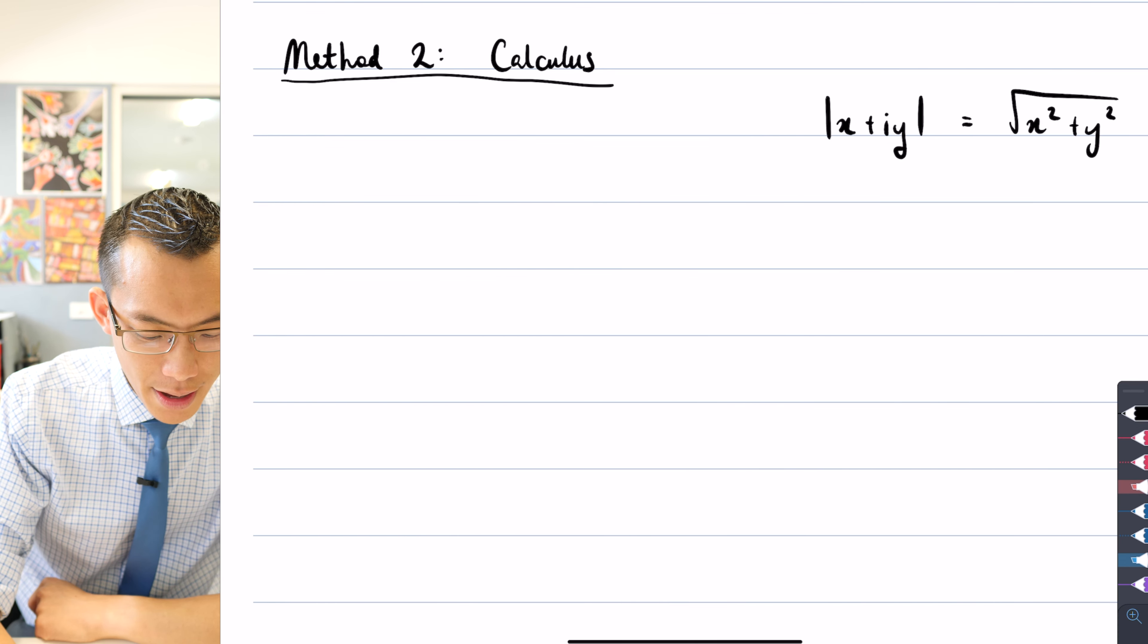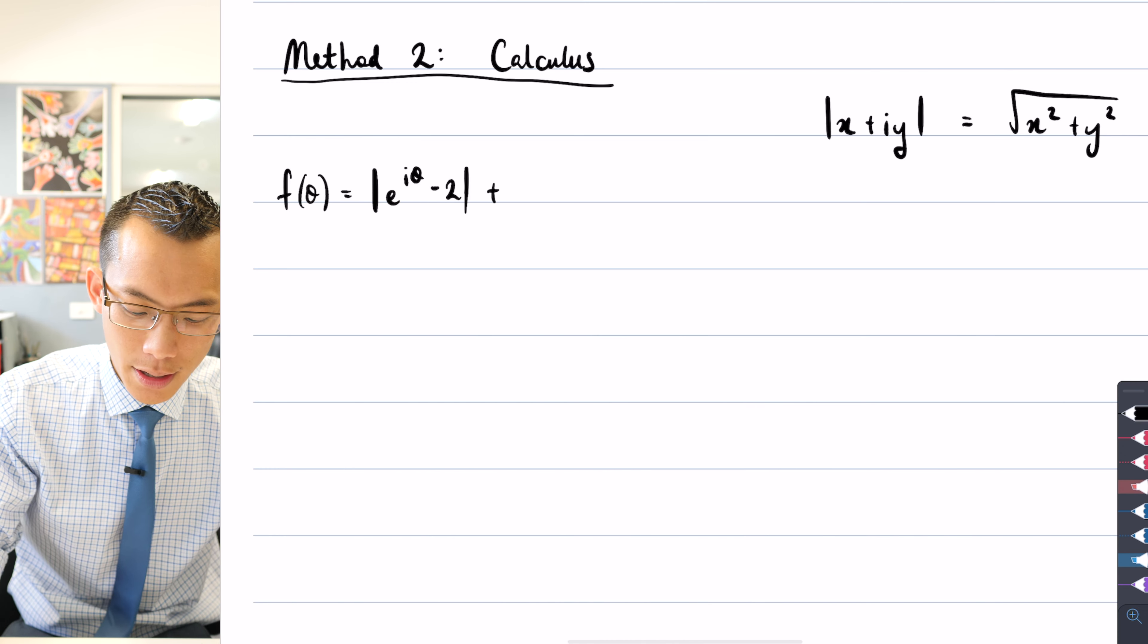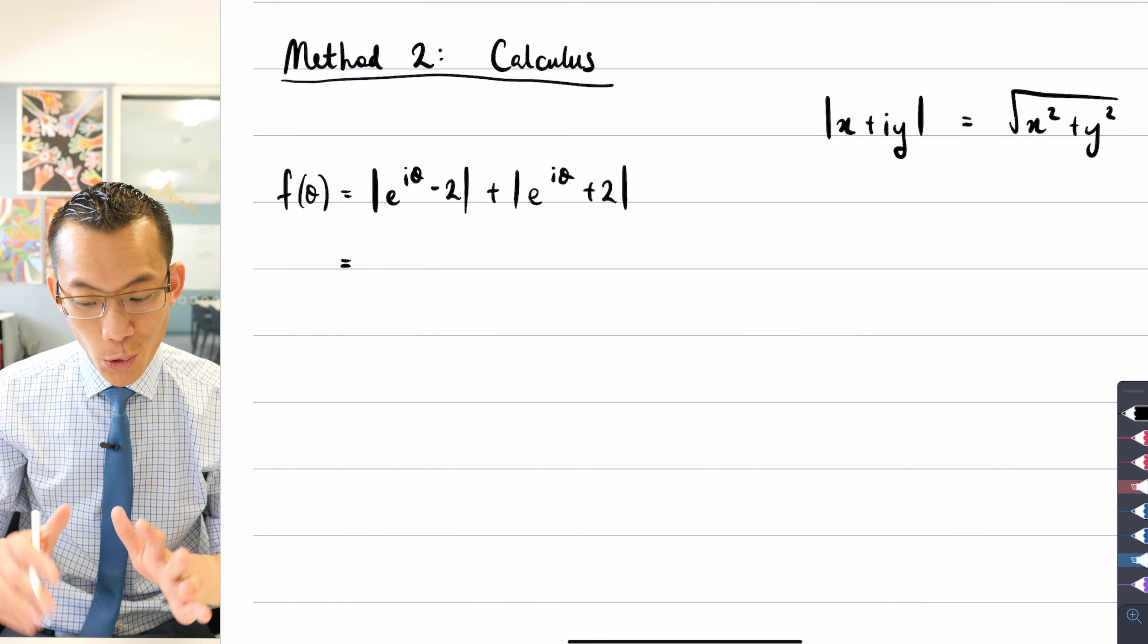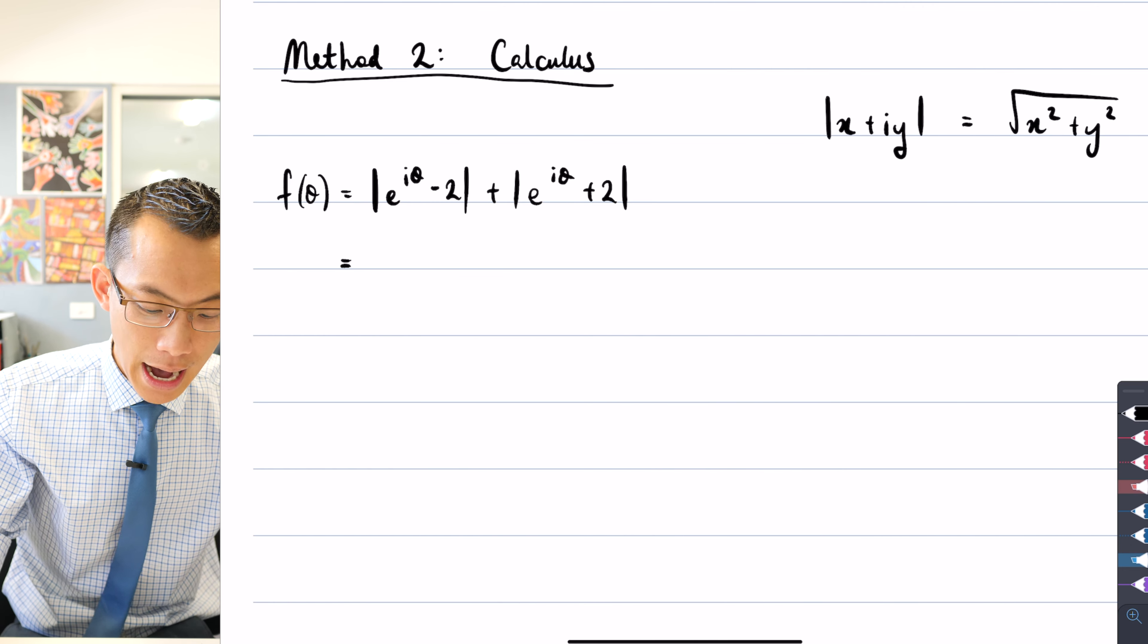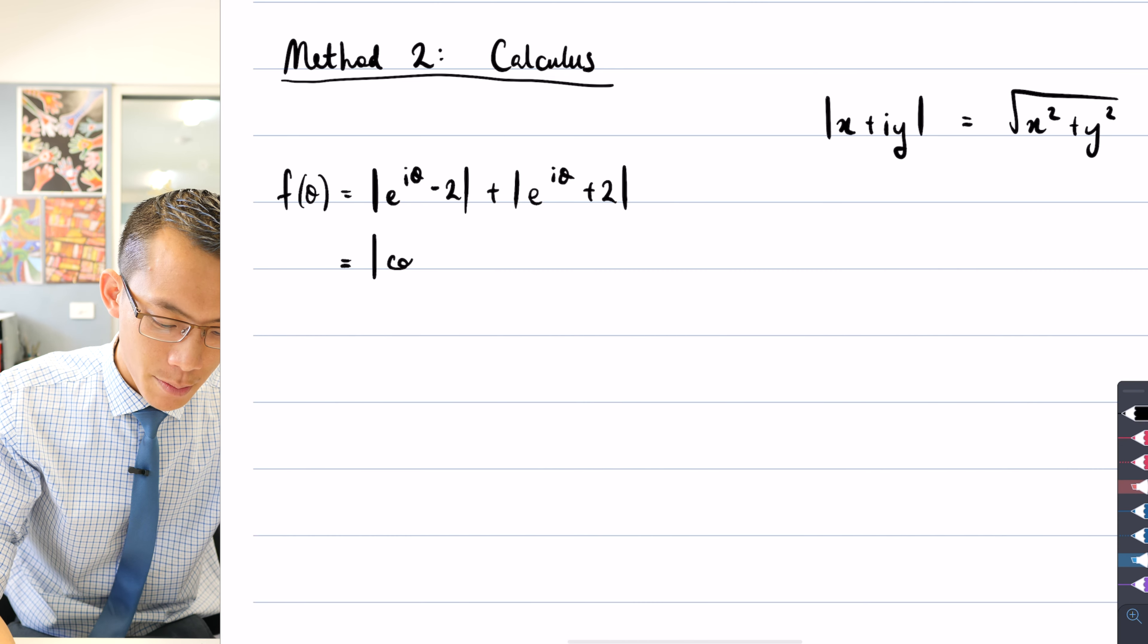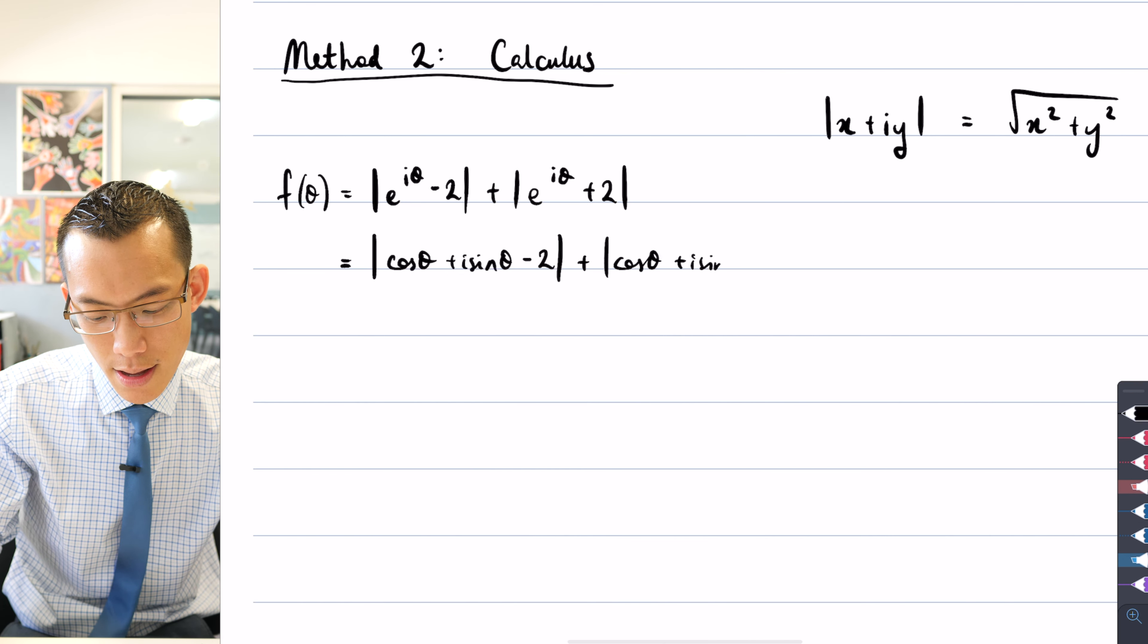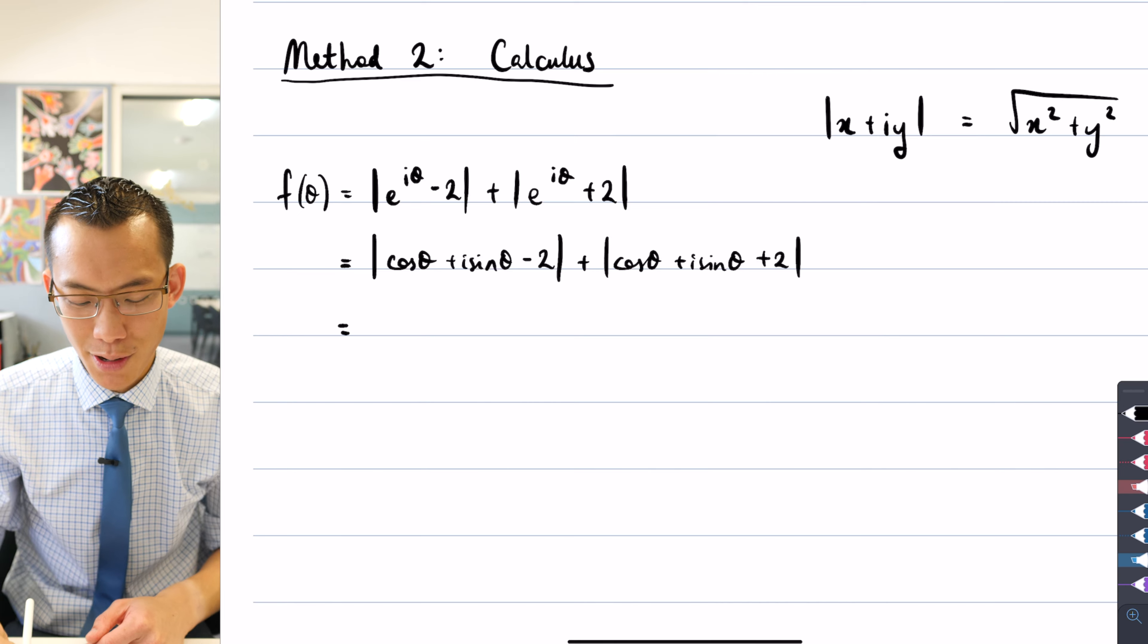I'm going to say this function of theta, right? That's what this is. It's the modulus of e to the iθ minus two plus modulus of e to the iθ plus two. What I can do is I can write it in polar form because that'll keep things in terms of thetas, but it will also enable me to use this fact because it gets rid of this modulus. That's what I was trying to avoid because that's a pain to differentiate. So let's go ahead and just write that out. Instead of writing e to the iθ in polar form, that number is just going to be cos θ plus i sin θ. Minus two. And then you get the same thing over here. It's cos θ plus i sin θ, and it's going to be plus two.